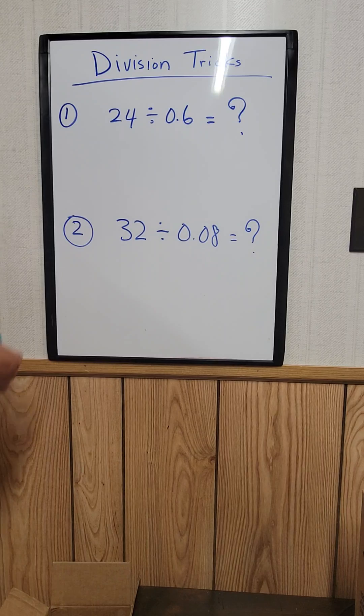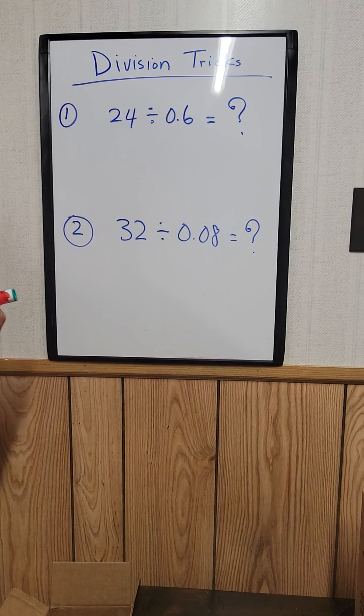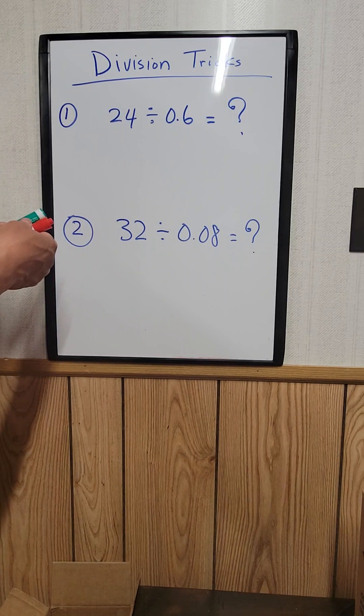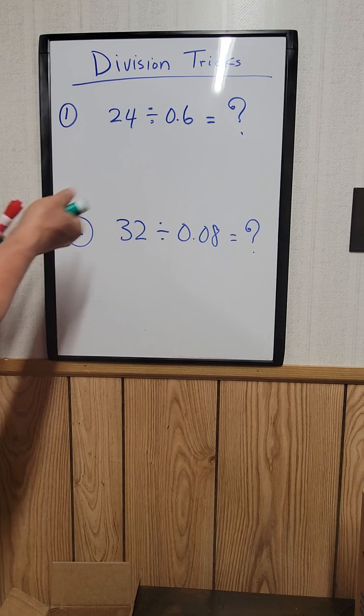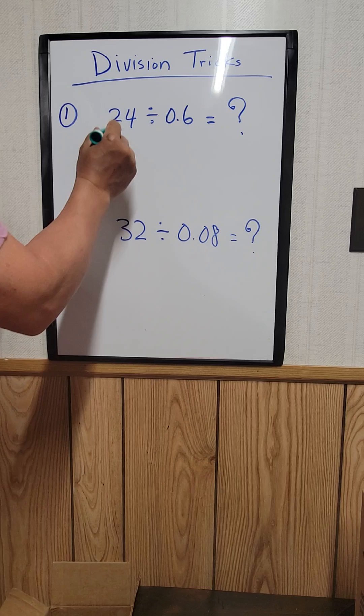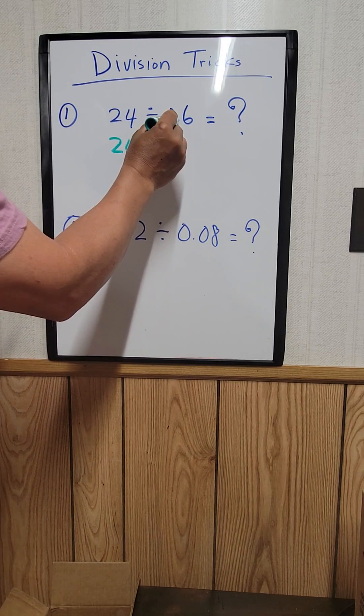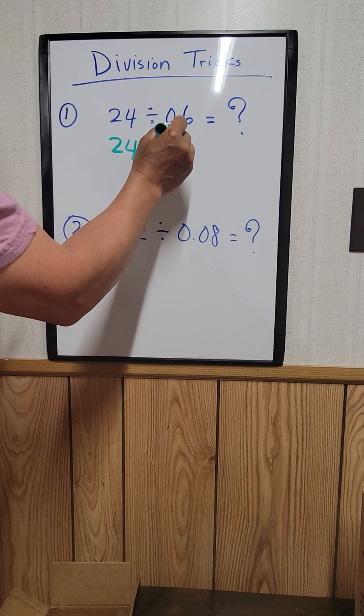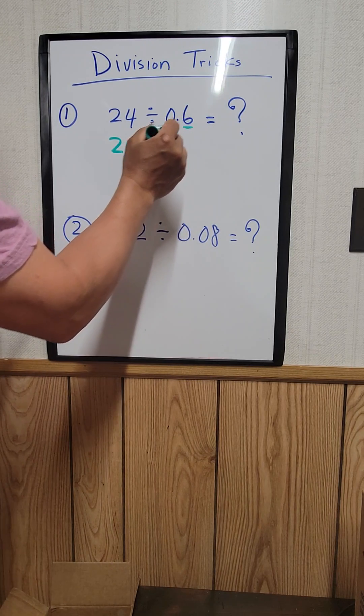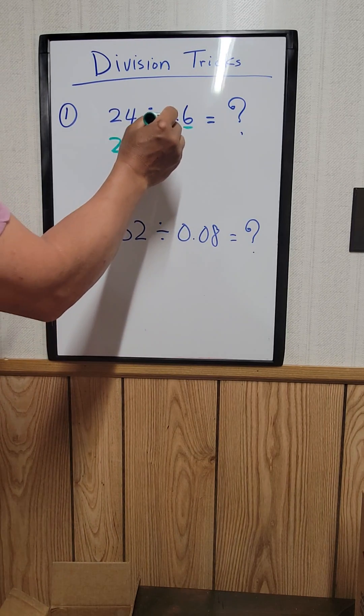For this one, 24 divided by 0.6. What you need to do is rewrite 24. Since there's one place after the decimal point in 0.6, you add a zero to make 240.